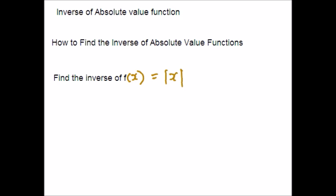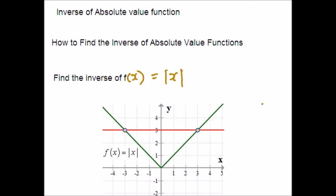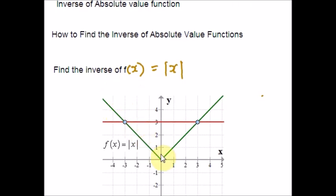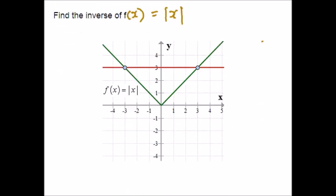There is no reason for moving forward to find its inverse algebraically because we already know that the inverse is not a function. As I already told you, the graph will look like a v-shaped one. If I draw a horizontal line, notice that it meets the graph more than once. So this fails the horizontal line test, and obviously this cannot be a one-to-one function, so it does not have an inverse.